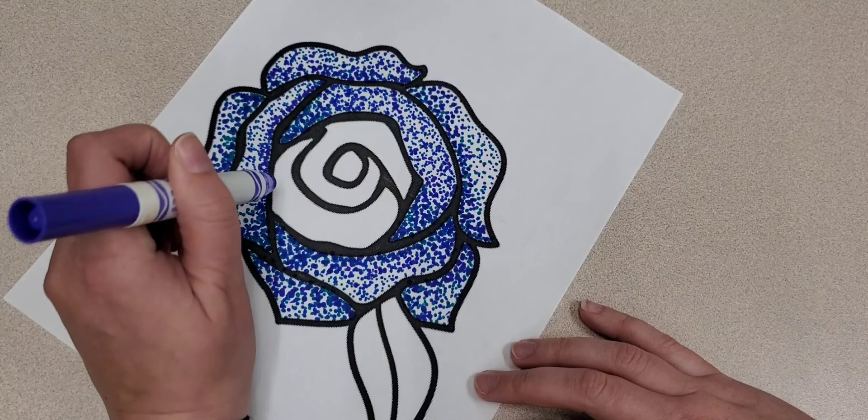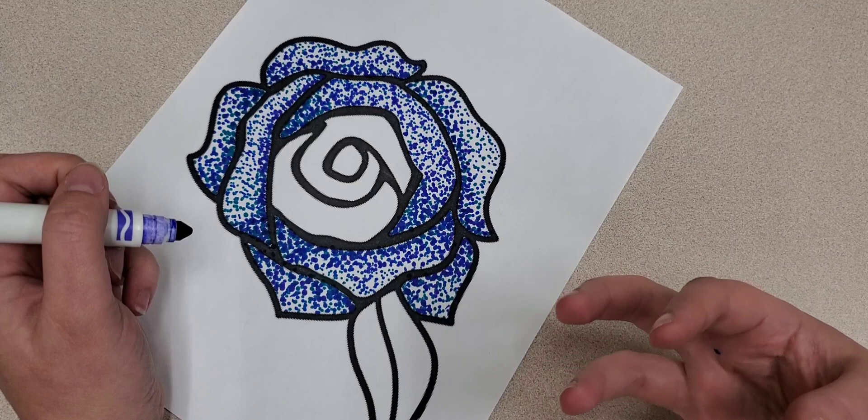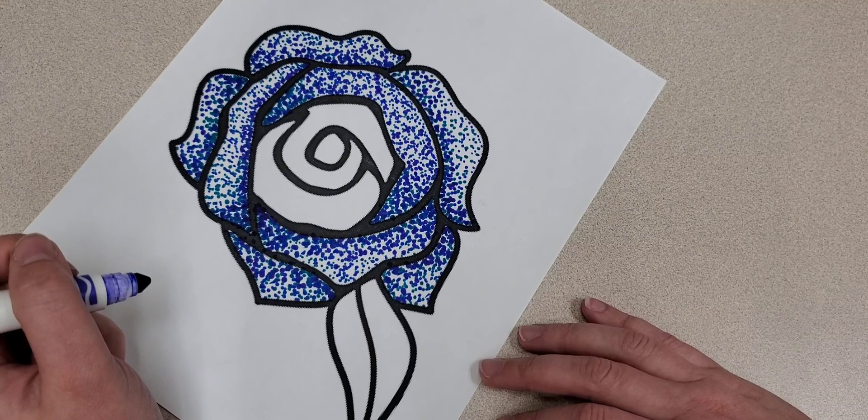And there are definitely some areas, and you can always go back in if you notice somewhere where you want it a little bit darker, a little bit more. You can always add more spots in.